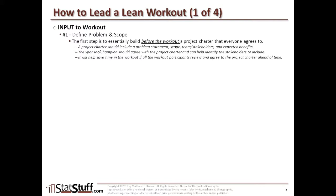Otherwise, you might find it taking a whole lot more time if you have to get agreement during the actual workout itself. The meeting should be scheduled and all team members identified ahead of time, obviously to make sure everyone's prepared and has committed to participating. Ideally, you may not want to include more than ten people — it's more ideal if you can get it to five, six, or seven. If you're at ten or more, you probably want to scale back and make sure you're not having too much overlap between folks, or maybe your scope is too big. When you have too many people involved, it can get unwieldy and end up taking a whole lot longer to make progress.